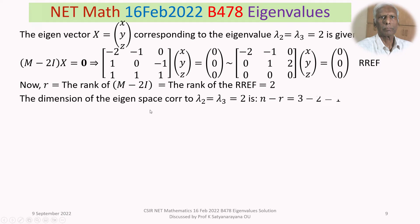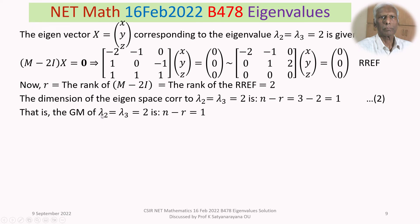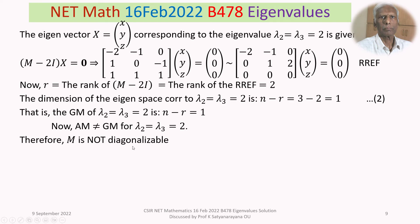The dimension of the eigenspace corresponding to lambda2 = lambda3 = 2 is n - r = 3 - 2 = 1. So the geometric multiplicity of eigenvalue 2 is 1, but its algebraic multiplicity is 2. Since algebraic multiplicity does not equal geometric multiplicity for eigenvalue 2, M is not diagonalizable.